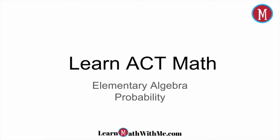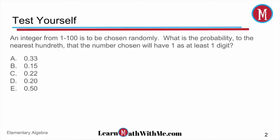This is the Elementary Algebra video on probability. Let's go ahead and start right in with the test yourself problem. Pause the video and try this problem on your own. You should have gotten D, 0.20. Let's take a look at the problem now.